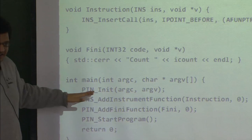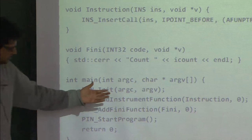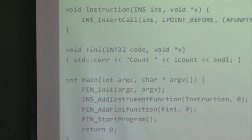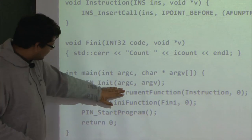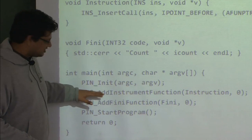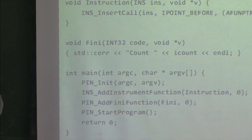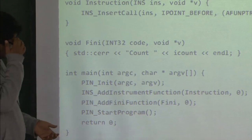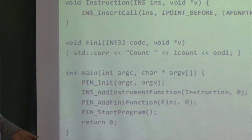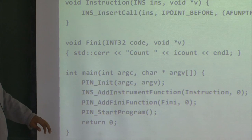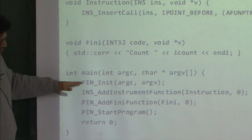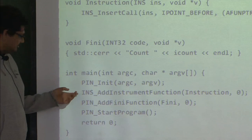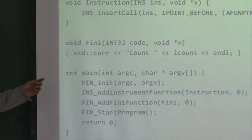PIN_Init takes command line arguments to initialize the command line arguments and runtime system. The main function always has to be present — PIN_StartProgram never actually returns; the return zero at the end is just to make the compiler happy. When PIN_StartProgram executes, it starts the application and begins the instrumentation process.